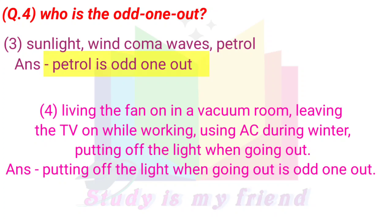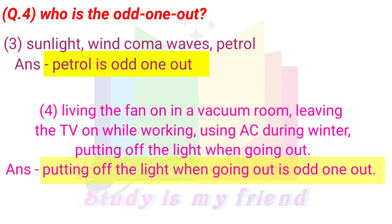4. Leaving the fan on in a vacant room, leaving the TV on while working, using AC during winter, putting off the light when going out. Answer: Putting off the light when going out is the odd one out.